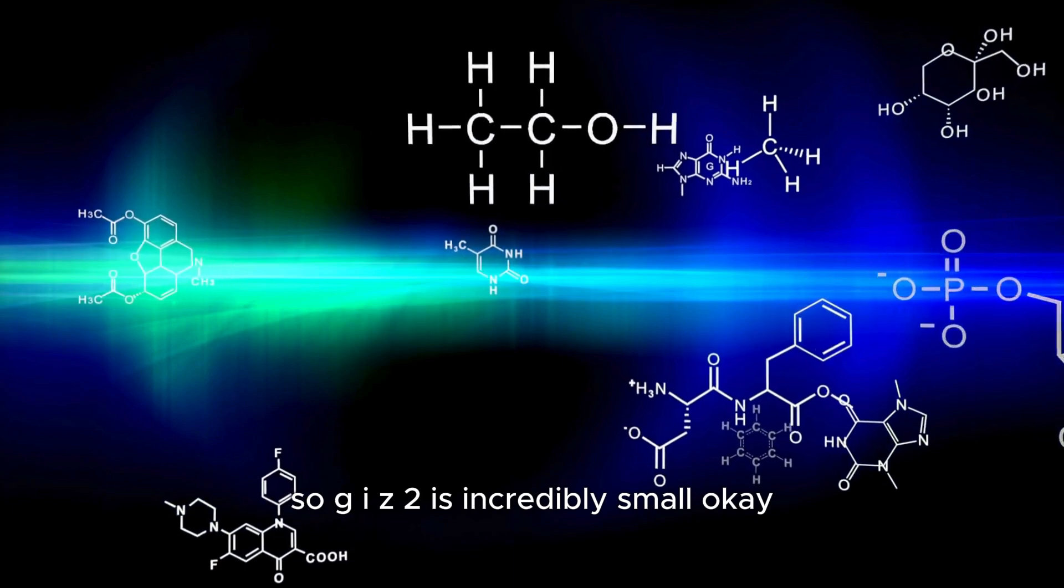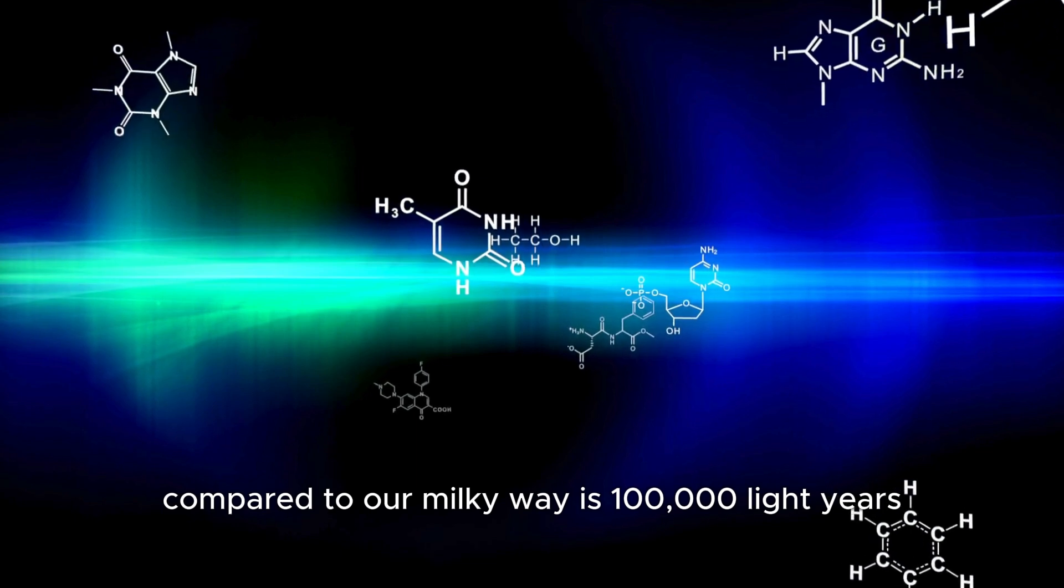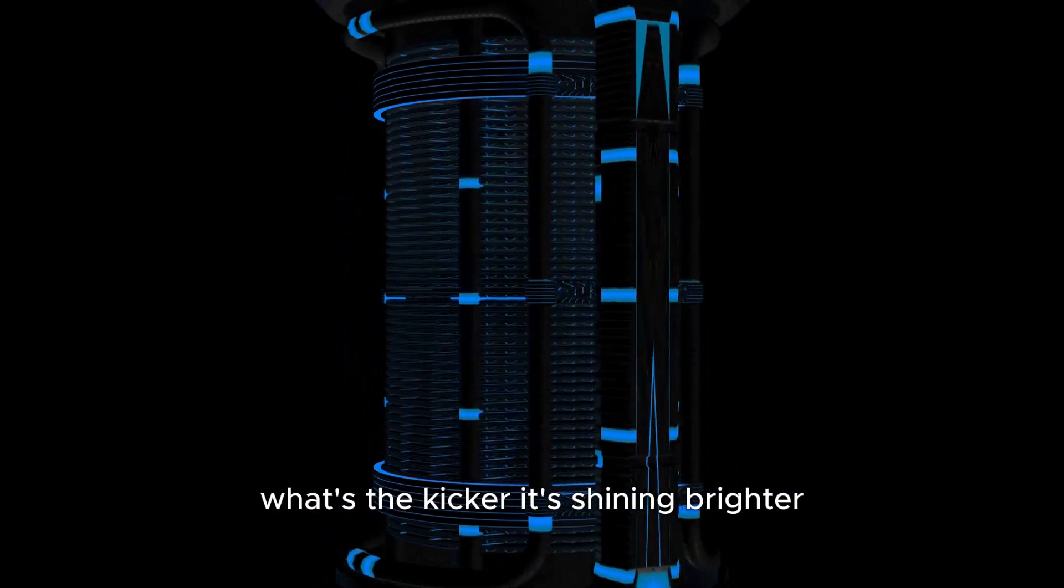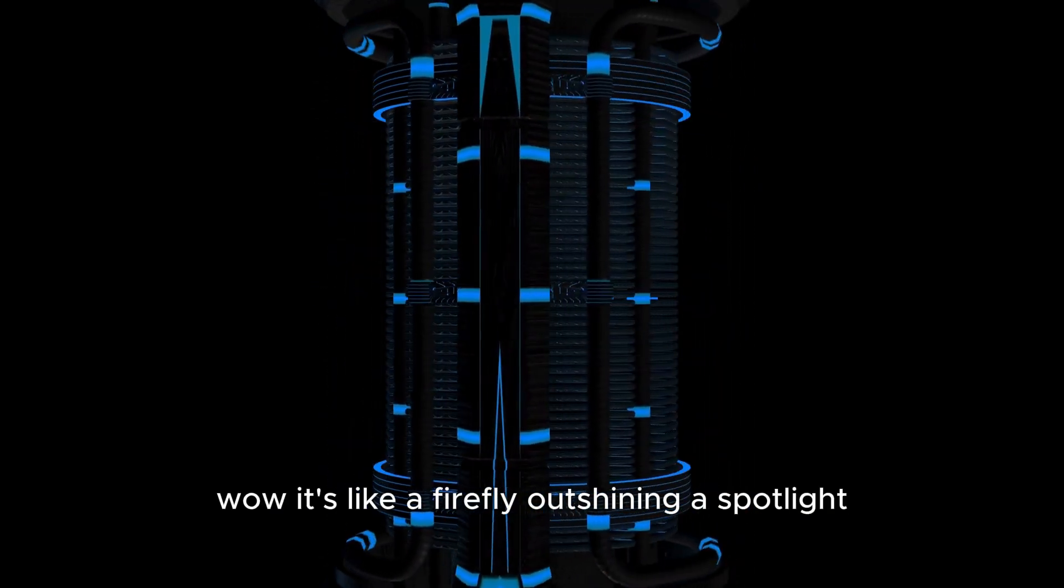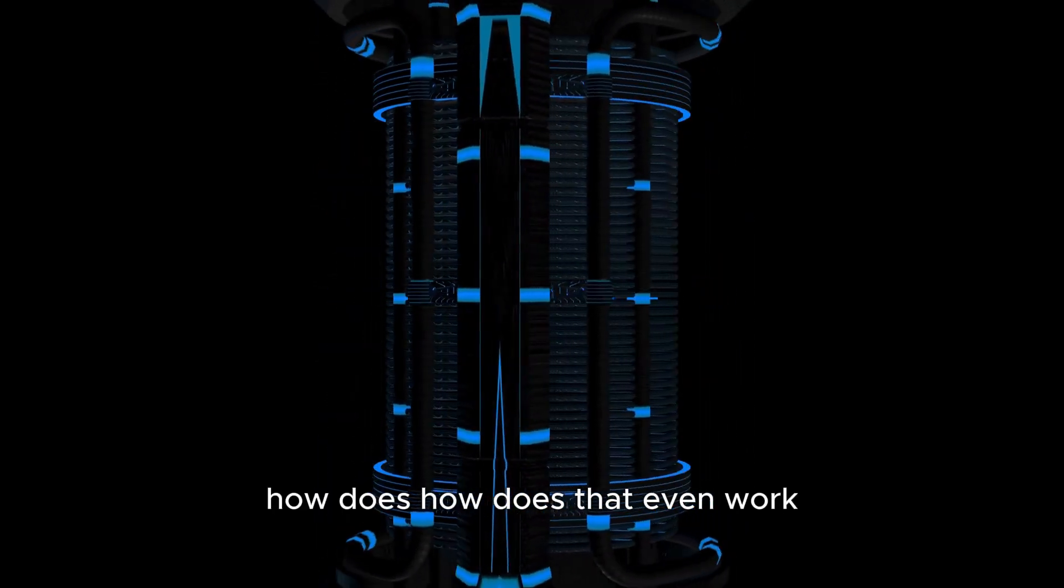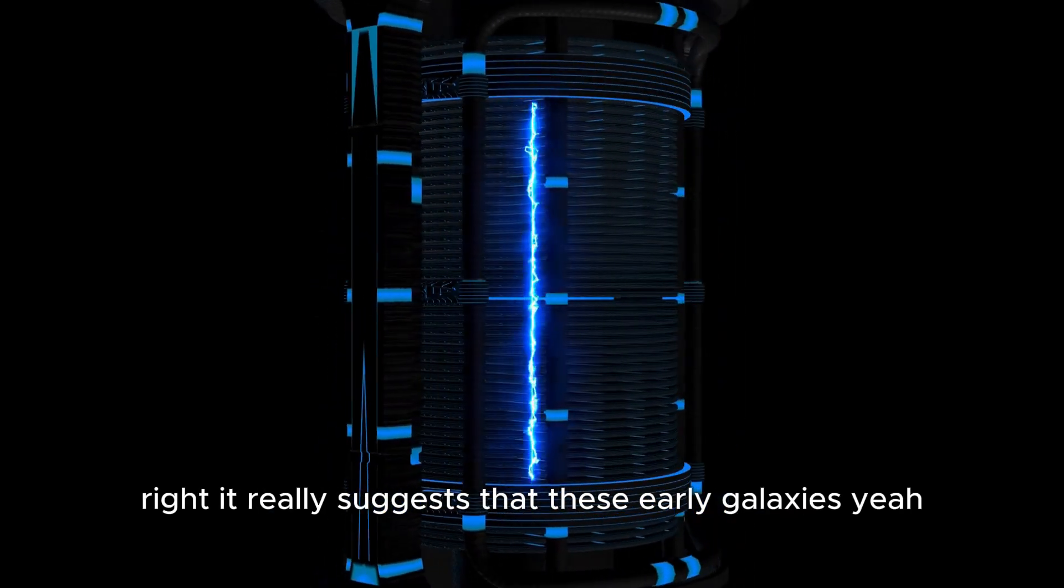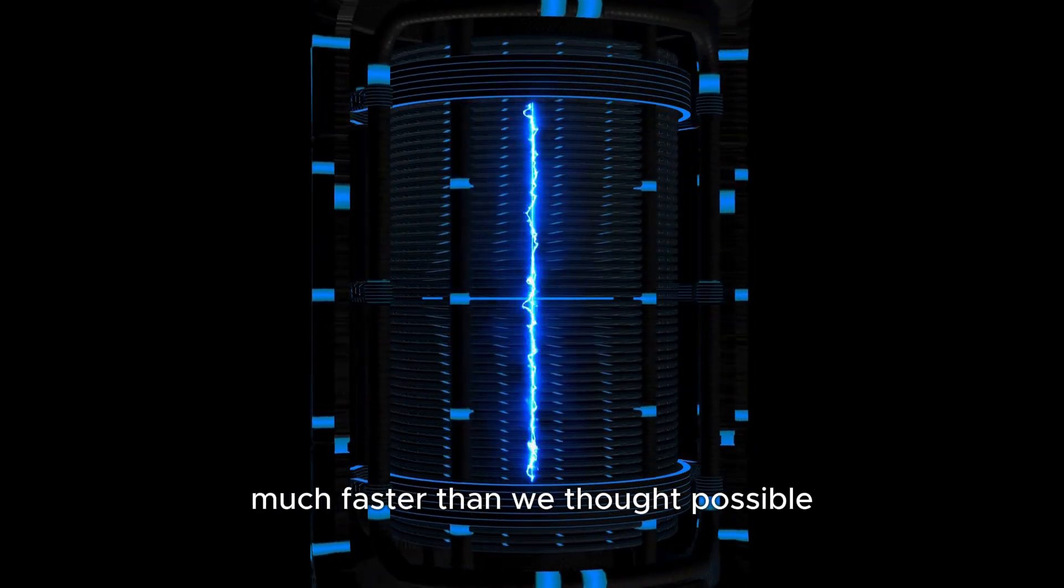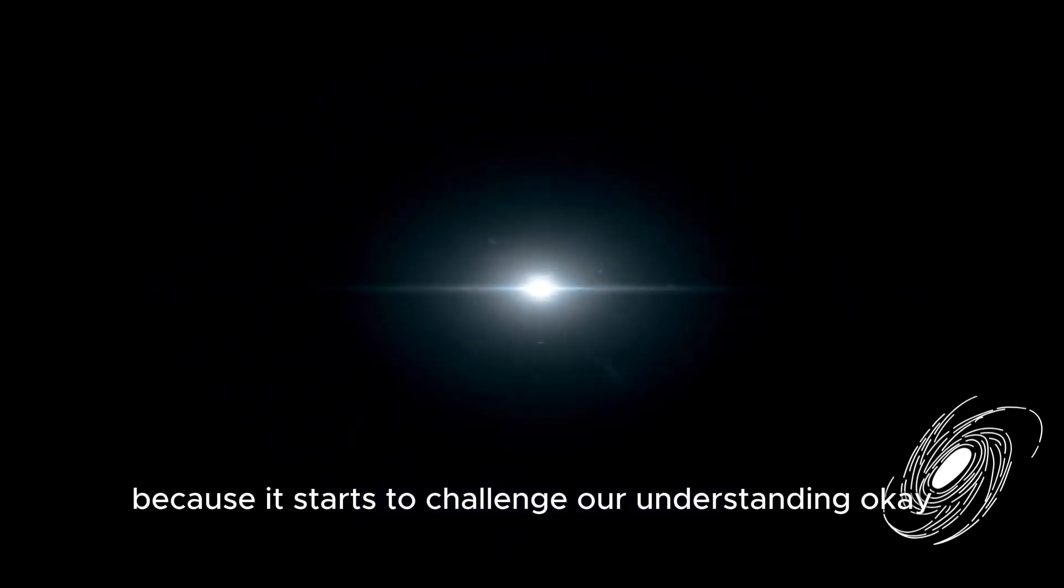So GIZ2 is incredibly small, only about 300 light years across, compared to our Milky Way's 100,000 light years. So tiny. But here's the kicker. It's shining brighter than our entire galaxy. It's like a firefly outshining a spotlight. It really suggests that these early galaxies were forming stars at an incredible rate, much faster than we thought possible. And this is where things get really interesting because it starts to challenge our understanding of the expanding universe.